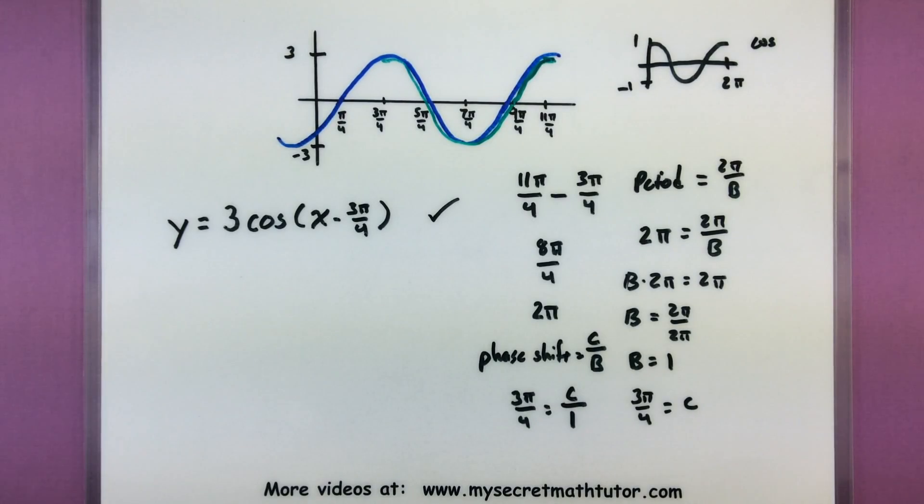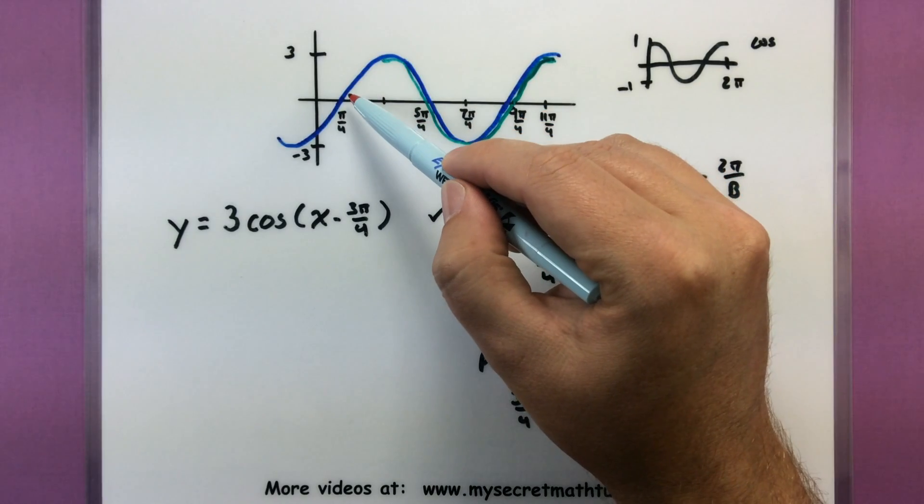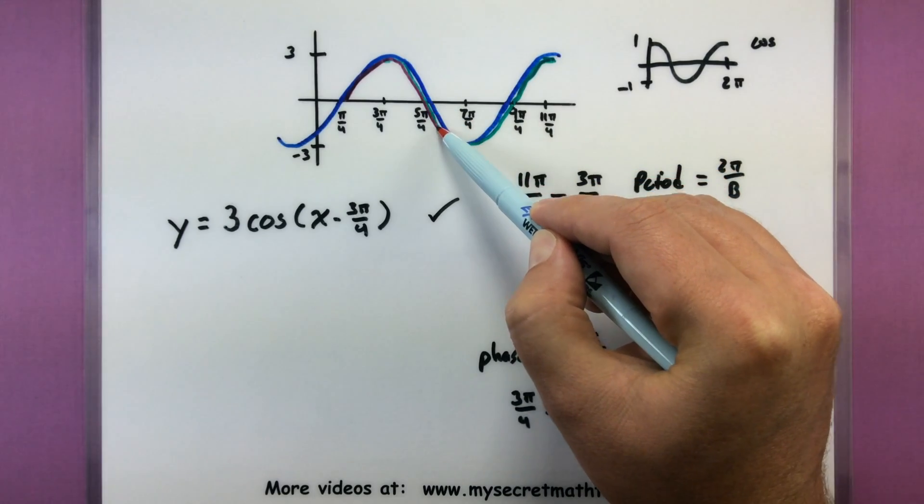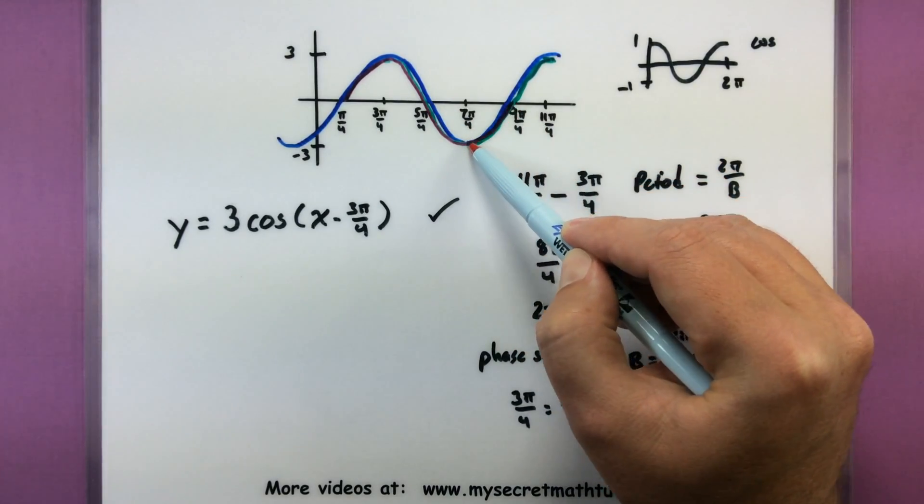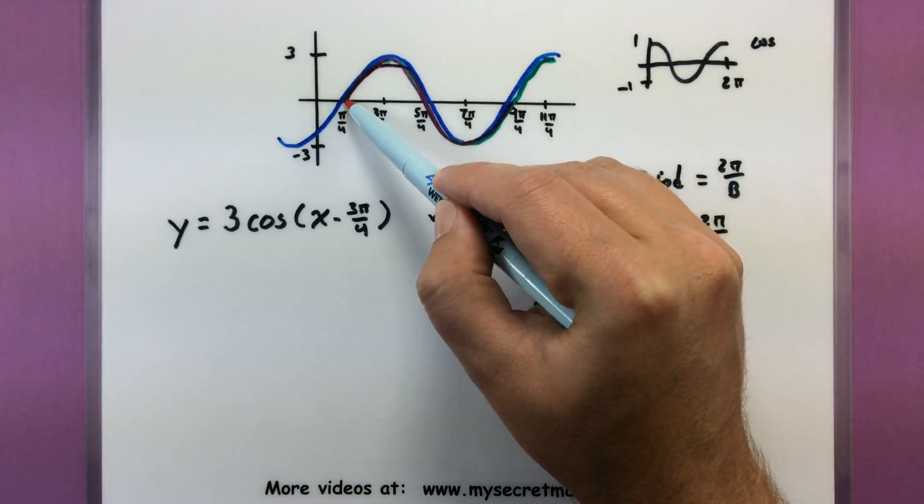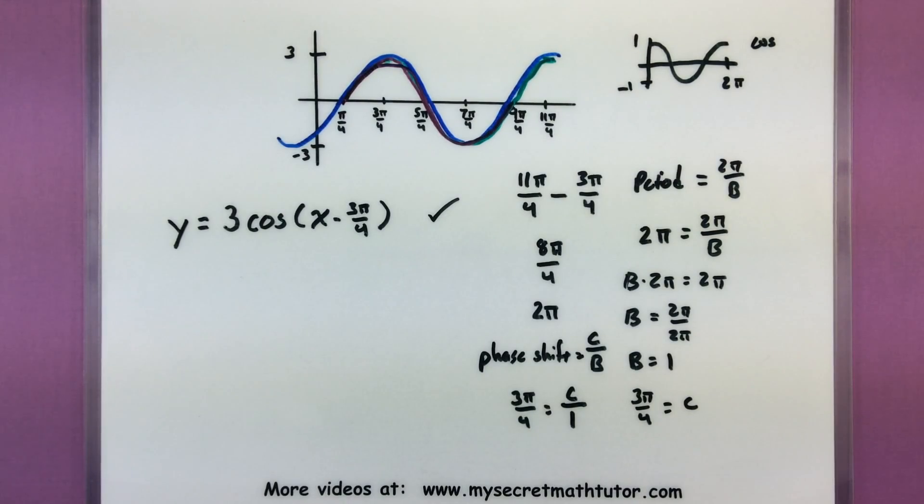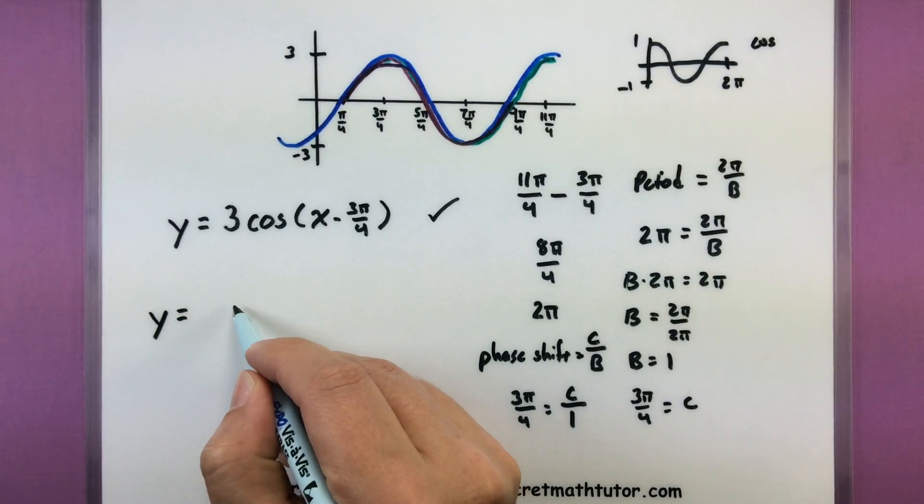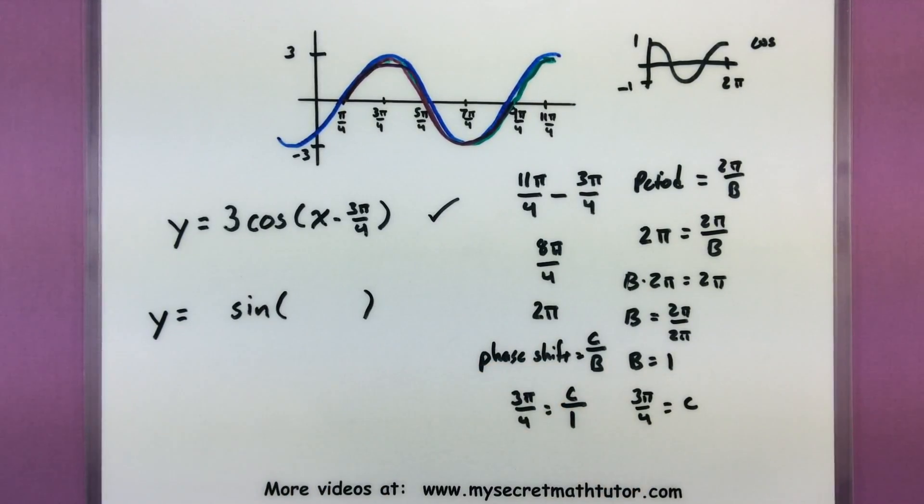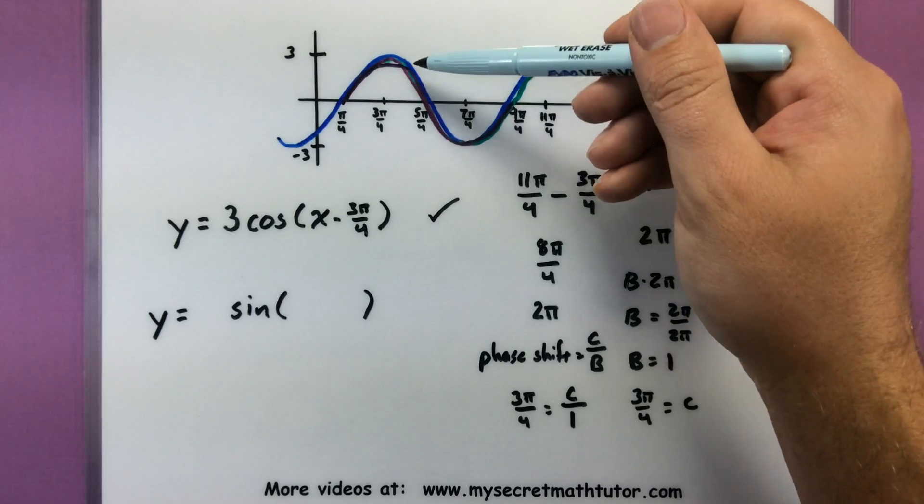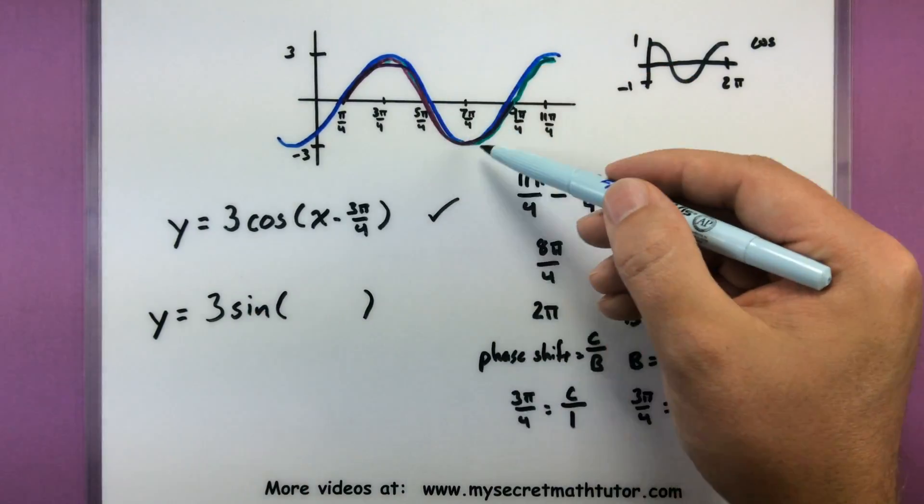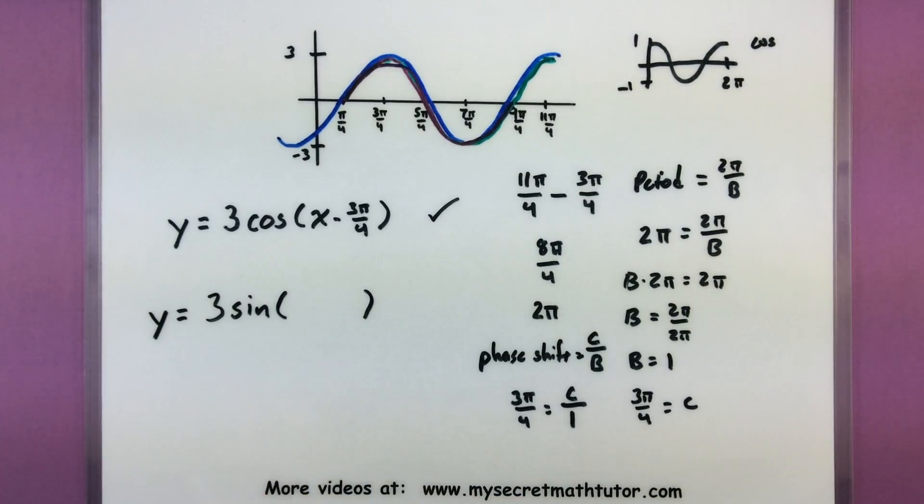Now just to really highlight that there could be multiple equations that still represent the same graph, let's go ahead and create a sine equation by using this shape right here. So looks like we could extract out that nice little s shape. Just that portion. So if I want to use that, I would say this is sine of something. The amplitude is going to be exactly the same. This little s shape has not been flipped over. So let's keep that positive.